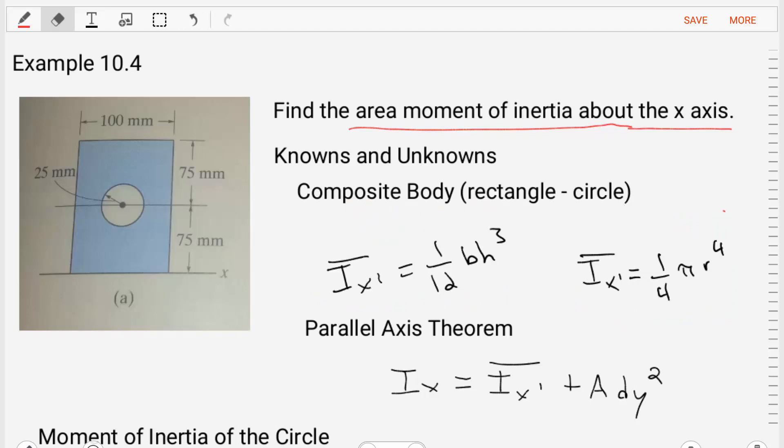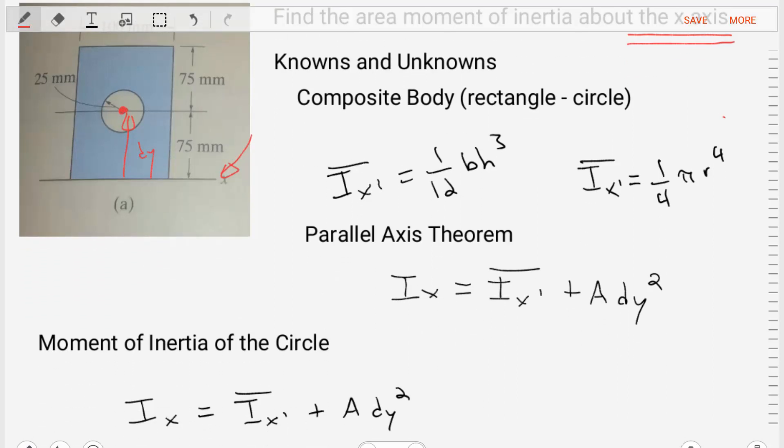Now, since we are asked to find the moment of inertia about the x-axis, and the x-axis does not sit at the centroid of the rectangle or of the circle, that means we're going to need to apply the parallel axis theorem. And in that theorem, the moment of inertia about the x-axis is going to be equal to the moment of inertia from the centroid plus the area above the axis times the distance dy squared between the axis, between x and x-prime.